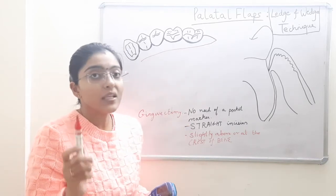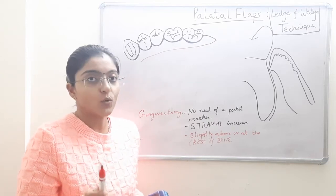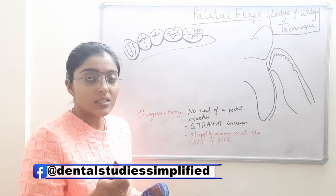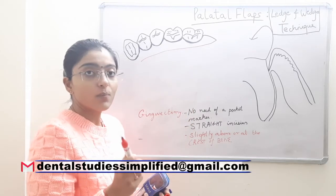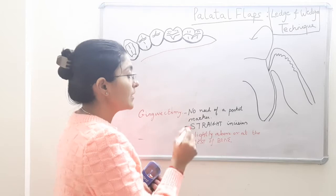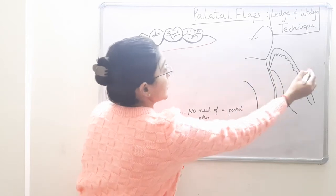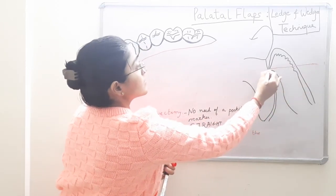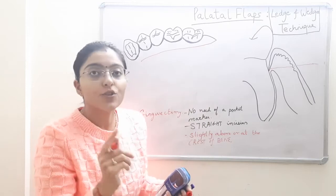A pre-surgical diagnostic probing is performed, also known as bone sounding or transgingival probing, which helps us determine any underlying osseous topography defects. It also helps us determine the pocket depth and tissue thickness. With the help of transgingival probing we understand these parameters, and our straight incision will be just slightly above the crest of the alveolar bone. If it is slightly above we are on the safer side, because if we place our incision at the crest of the alveolar bone and the tissue is very thick, after removing the wedge of tissue when the flap is adapted back post-operatively it may fall short.